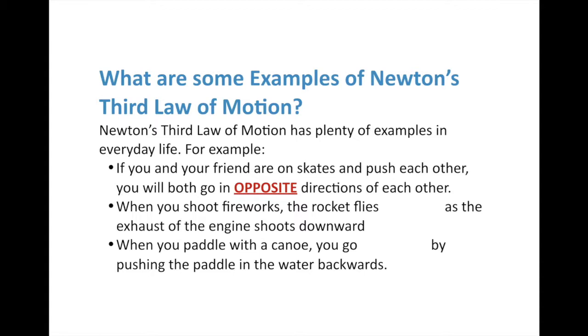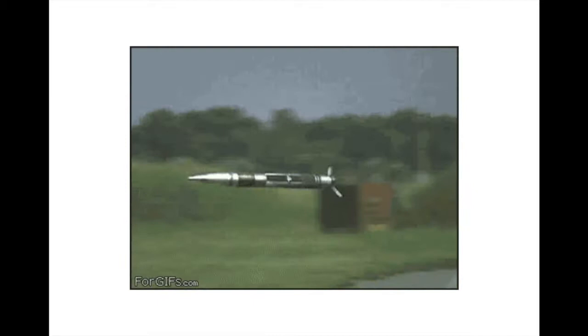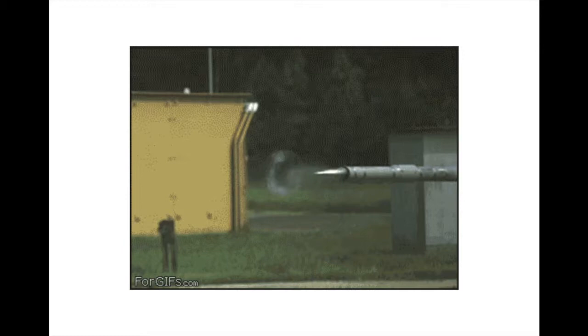Whenever you shoot fireworks, rockets, or fire a gun, the rocket shoots upward while the exhaust of the engine shoots downward. We can look at this from a main gun on a tank — the propulsion pushed backwards and the rocket round moved forward. The explosion causes gas to escape out of the gun barrel, filling it up and pushing the round outward. The propellant goes one way and the round goes the other.